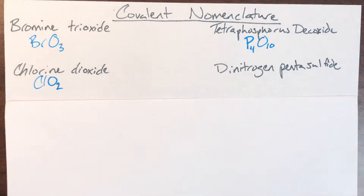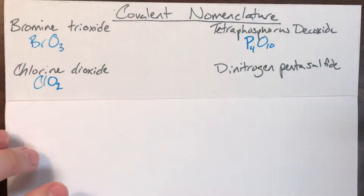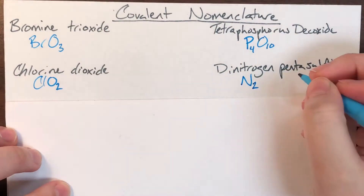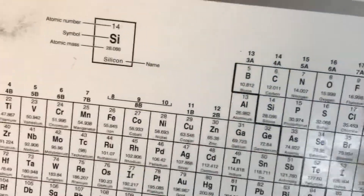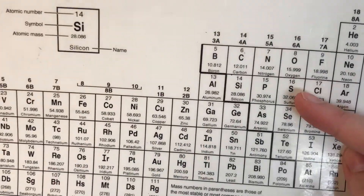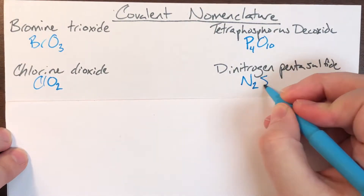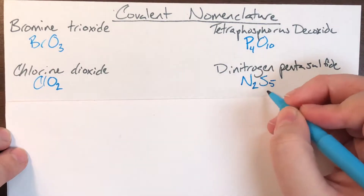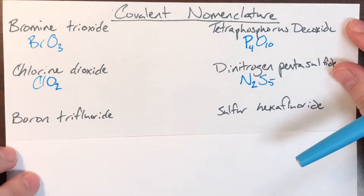Dinitrogen pentasulfide. Nitrogen is N, and di means 2. Sulfur is S, and penta means 5. So N2S5 is the formula for that one.